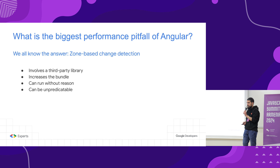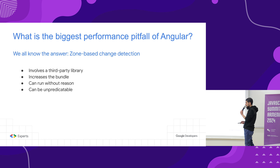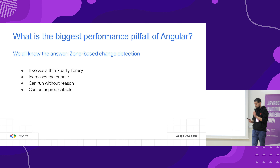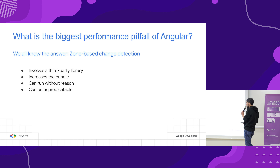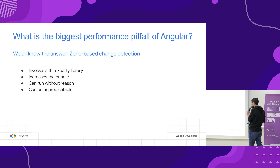First, let's understand the problem. Let's see what's the biggest performance pitfall of Angular. I guess you already understand what I'm going to say about it. Of course, this is zone-based change detection. We're going to talk about change detection today — that's the topic, that's the real thing that we are going to tackle.